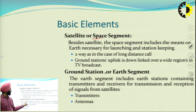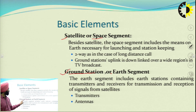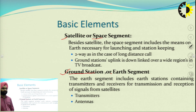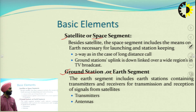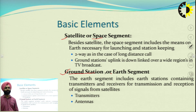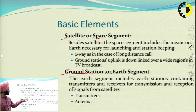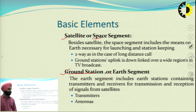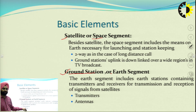We can broadly classify the total communication into two segments: the space segment and the ground segment. The space segment is called the satellite, and the ground station is known as the earth station. The satellite is a space segment that includes the means for launching and station keeping. The ground station generally transmits and receives signals via antennas, and it consists of transmitters as well as antennas.